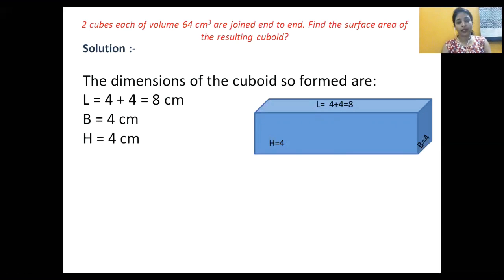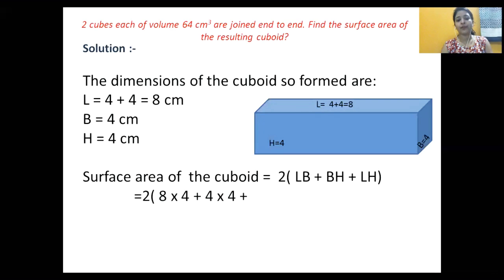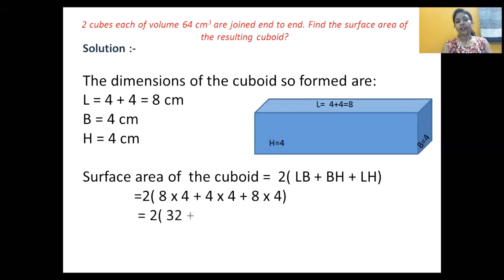Now we know all the edges of the cuboid. The formula for surface area of a cuboid is: 2(lb + bh + lh), where l is length, b is breadth, and h is height. Putting in the values: 2(8×4 + 4×4 + 8×4). This gives us 2(32 + 16 + 32).